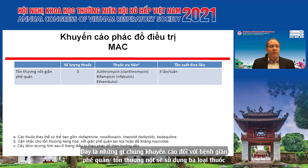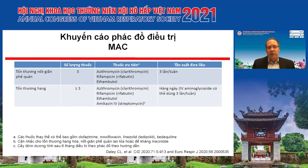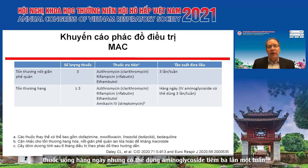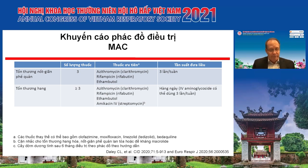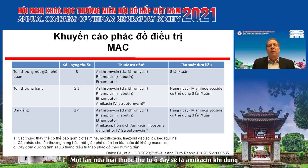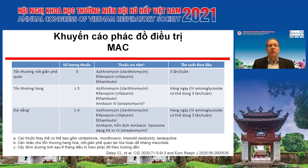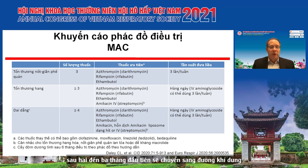In summary for MAC regimens: for nodular bronchiectatic disease, use three drugs, macrolide-based with azithromycin preferred, administered three times weekly. For cavitary disease, three or more drugs with a fourth drug being parenteral amikacin or streptomycin — give oral drugs daily but the aminoglycoside can be three times a week. For treatment-refractory disease, four or more drugs with inhaled amikacin added; if cavitary, consider starting IV amikacin first then transitioning to inhaled after two to three months. In refractory disease, oral drugs should be given daily.